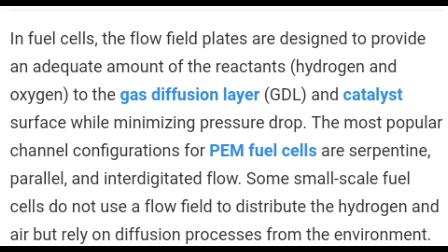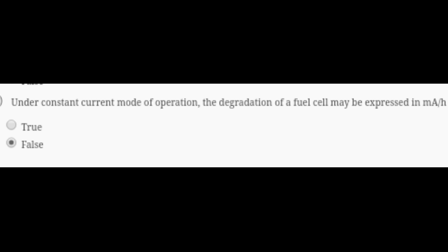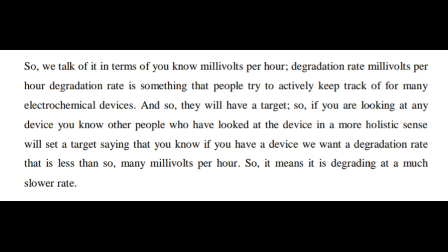Question 6: Under constant current mode of operation, the degradation of a fuel cell may be expressed in milliampere per hour. This is absolutely false. You can see the proof from the picture: degradation rate millivolts per hour. Degradation rate is something that people try to actively keep track of for many electrochemical devices, measured in millivolts per hour, not milliamperes per hour.